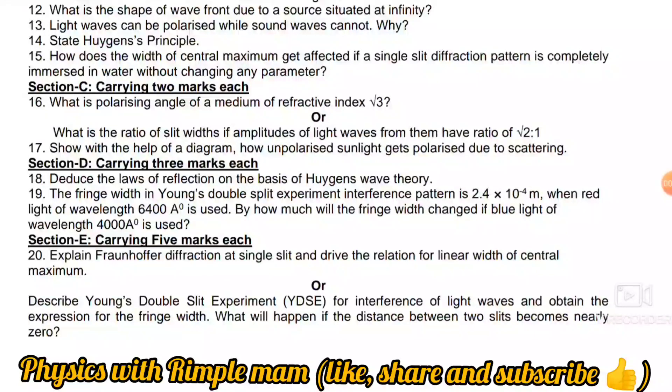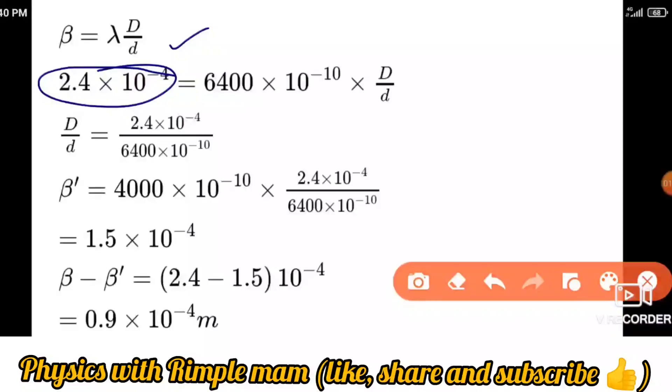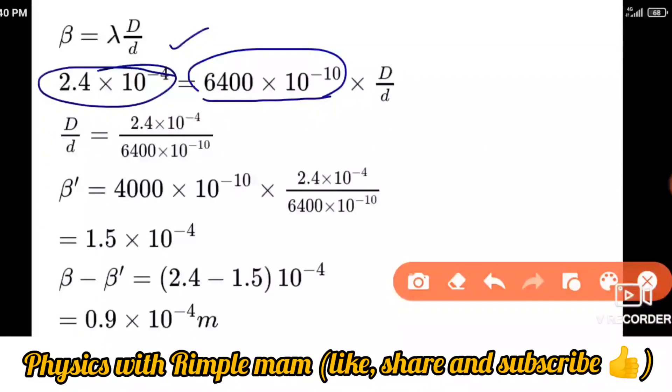Question 19: The fringe width of a double slit experiment interference pattern is 2.4 into 10 raised to power minus 4 meters when red light of wavelength 6400 angstrom is used. First convert angstrom to meters: 6400 into 10 raised to power minus 10 meters. By how much will the fringe width change if blue light of wavelength 4000 angstrom is used? We need to find how much beta changes.